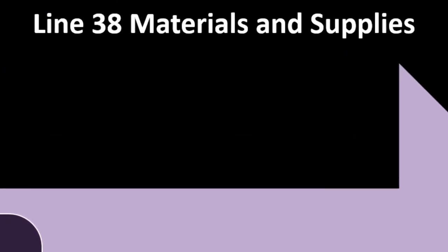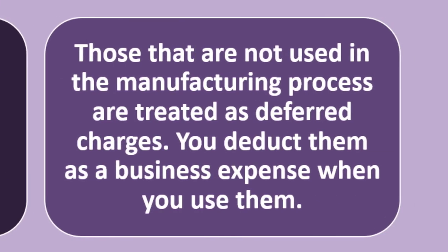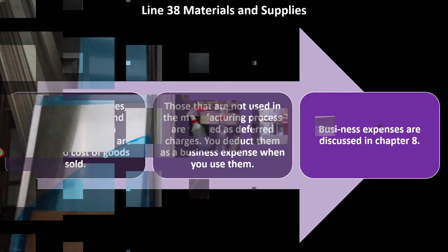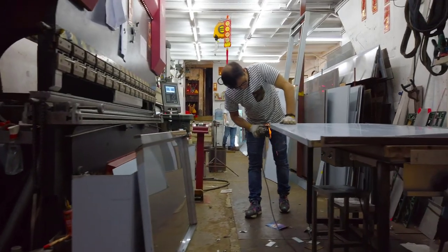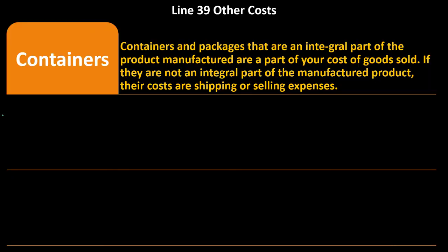Line 38, materials and supplies: materials and supplies such as hardware and chemicals used in manufacturing goods are charged to cost of goods sold. Those not used in the manufacturing process are treated as deferred charges — you deduct them as a business expense when you use them. Business expenses are discussed in Chapter 8. These materials and supplies are the smaller supply items, as opposed to the main raw materials that might go under the purchases line in a manufacturing business.